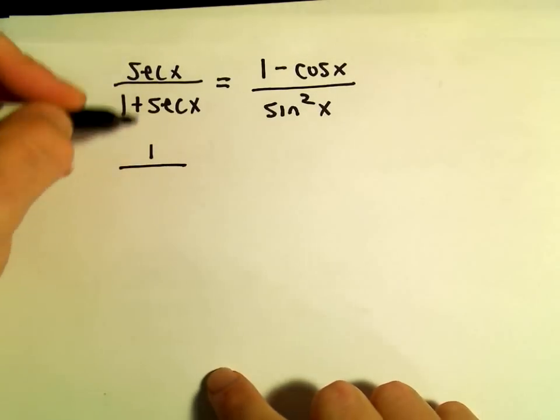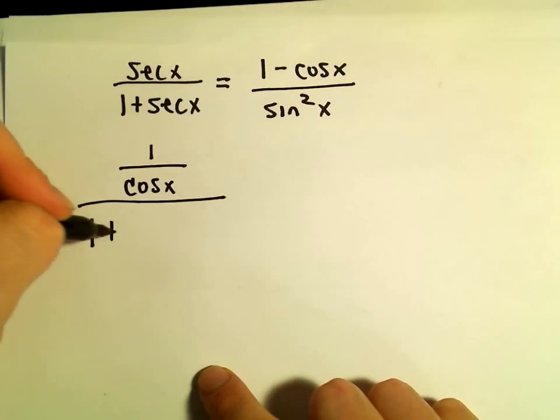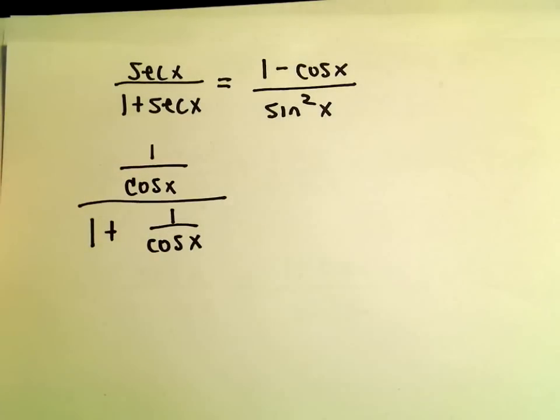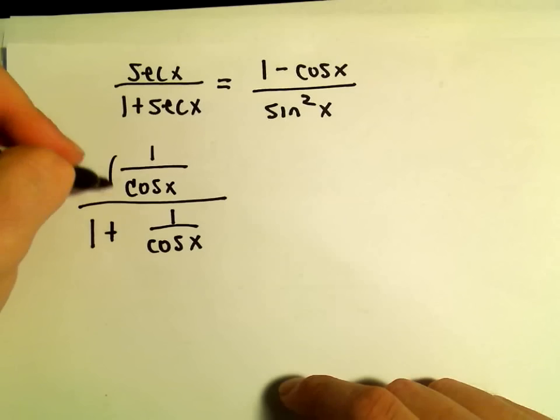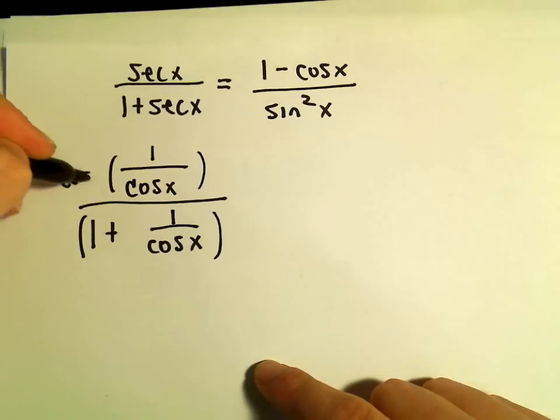There's really no sines. Secant is just going to be 1/cos(x), and then we would have 1 + 1/cos(x). There's a lot of different things we can do to start simplifying this down. What I'm going to do to get rid of some of these fractions is multiply the numerator and denominator by cos(x).